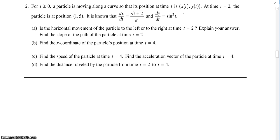I'll answer these questions. Part A is asking which direction horizontally is the particle moving at t equals 2. So we just plug in, since dx/dt is horizontal, we plug in t equals 2 there. So that is 2 plus 2 over e to the 2.